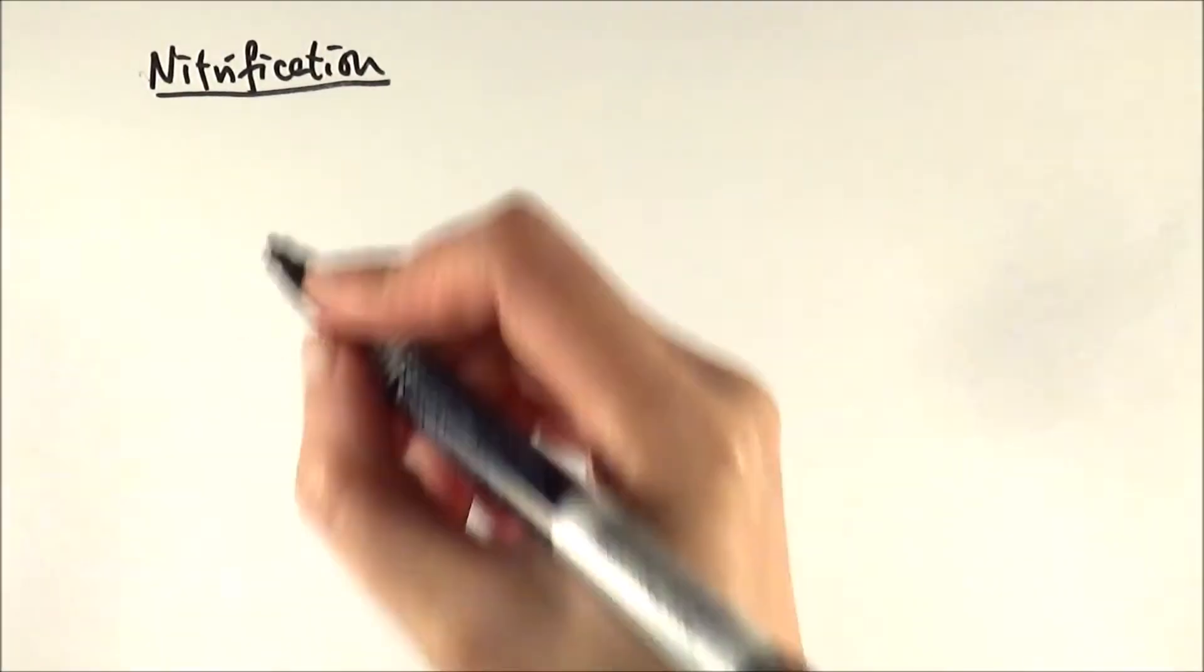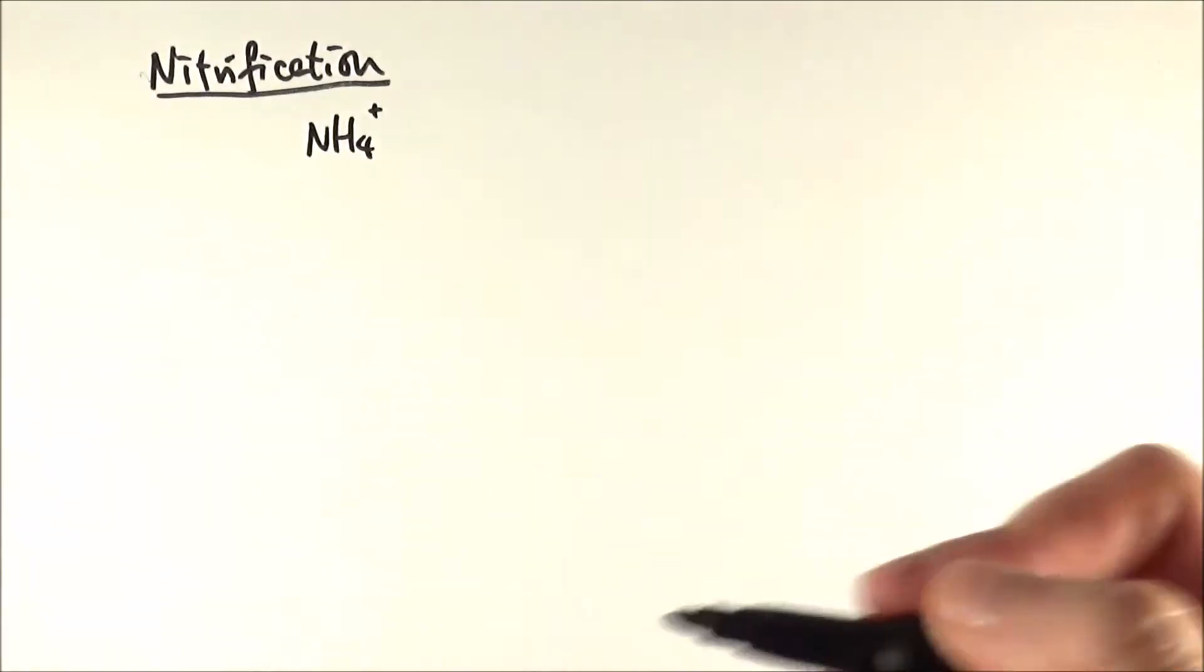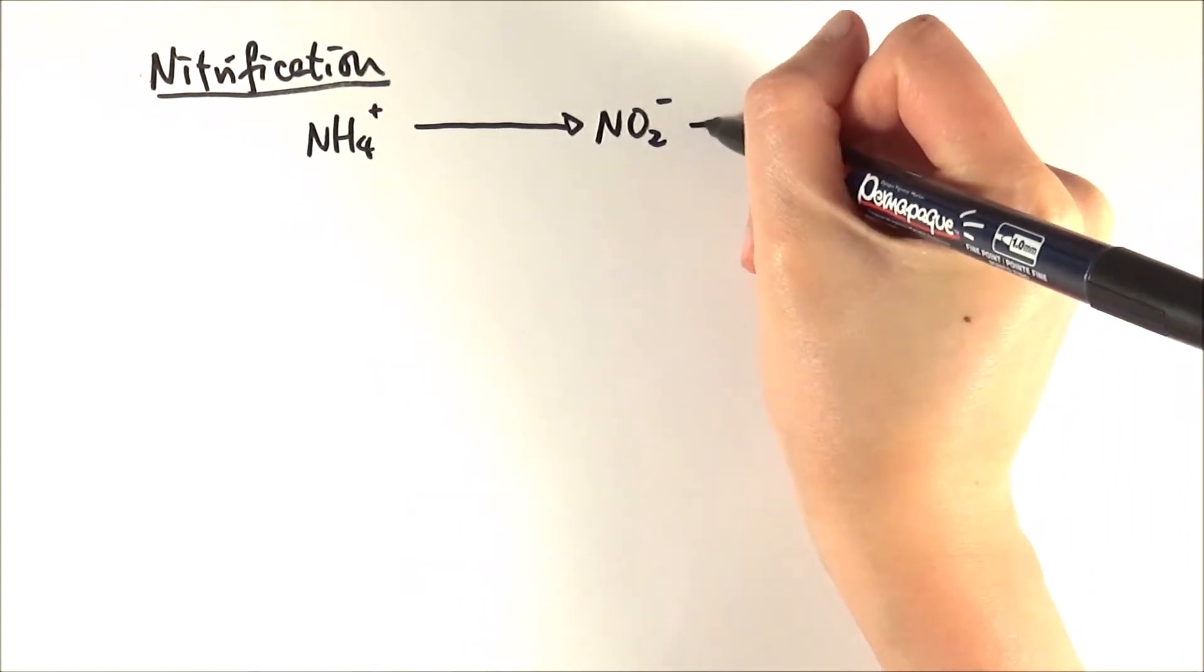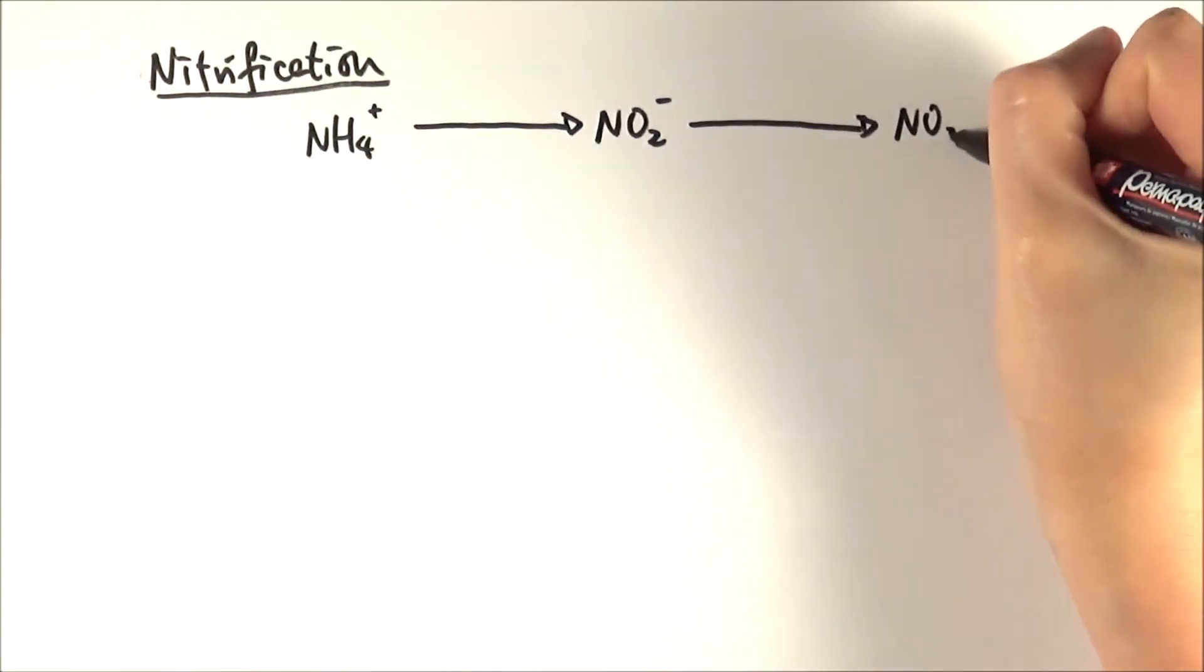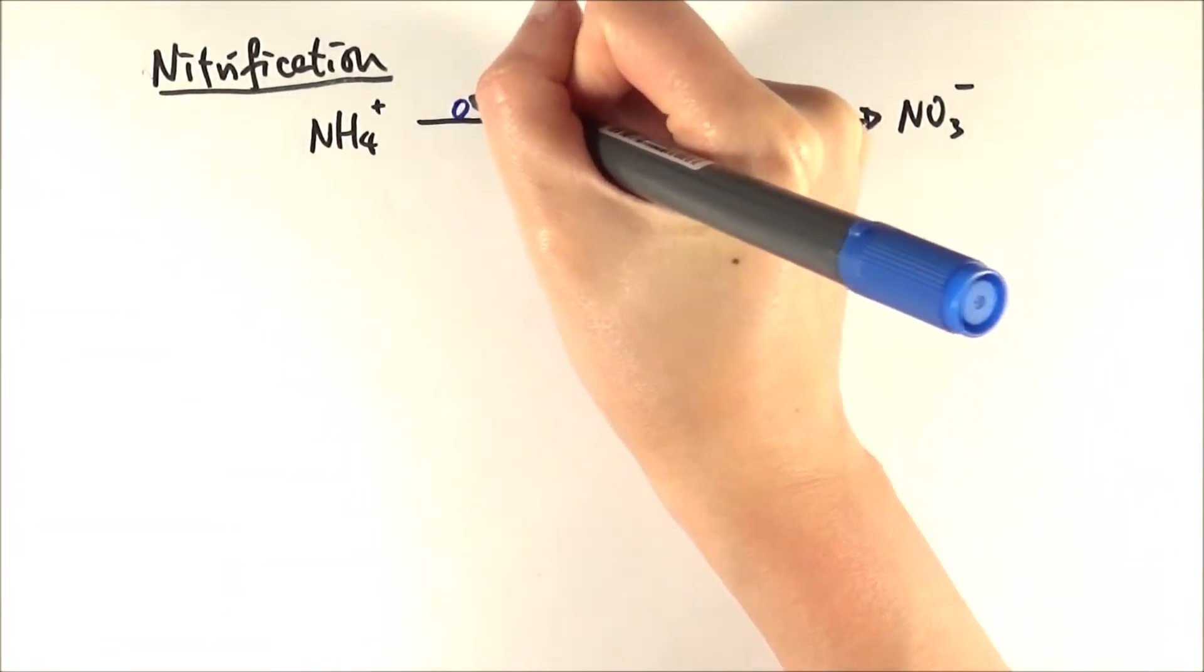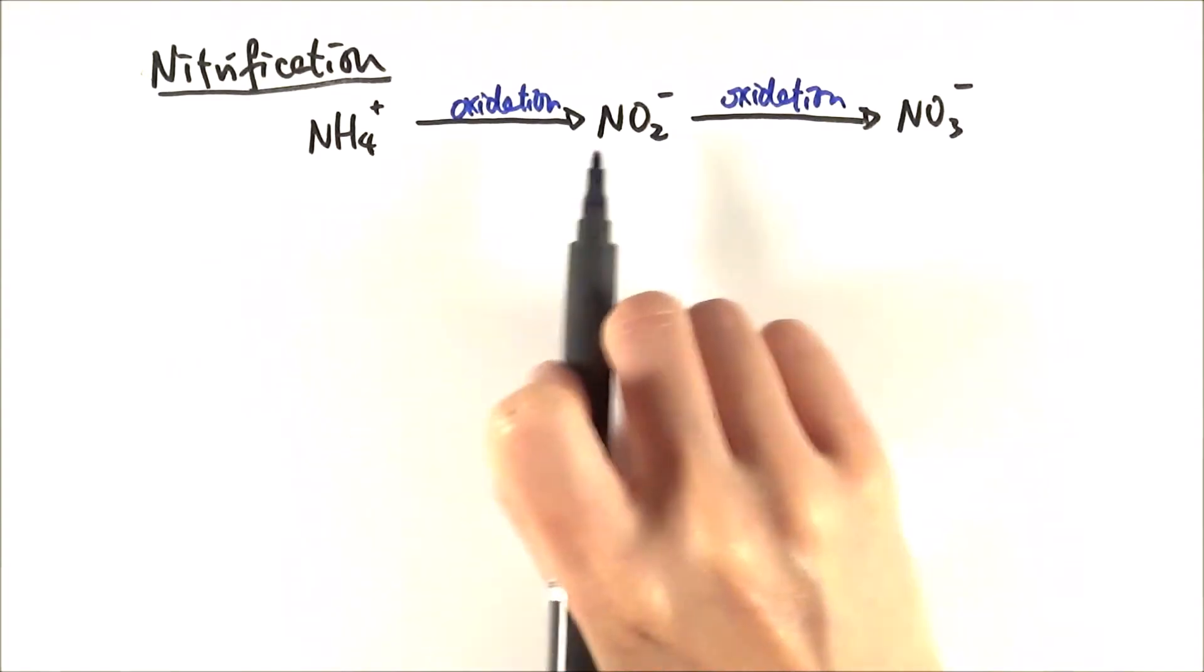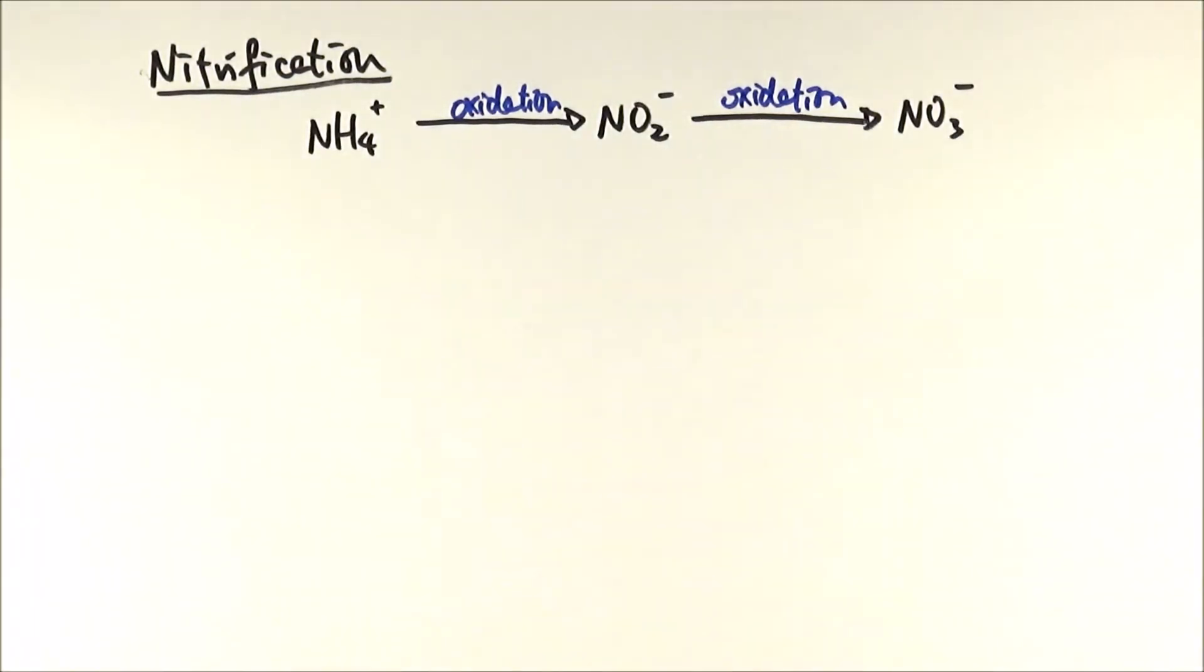In nitrification, ammonium ions, which is NH4+, is turned into nitrite, which is NO2-, and then later on, nitrite can then also be converted into nitrate, which is NO3-, and both of these reactions are oxidation reactions. It's quite easy to understand that if you look at their chemical formula. As you can see, they're gaining an oxygen here and then another one there. So they're both oxidation reactions.